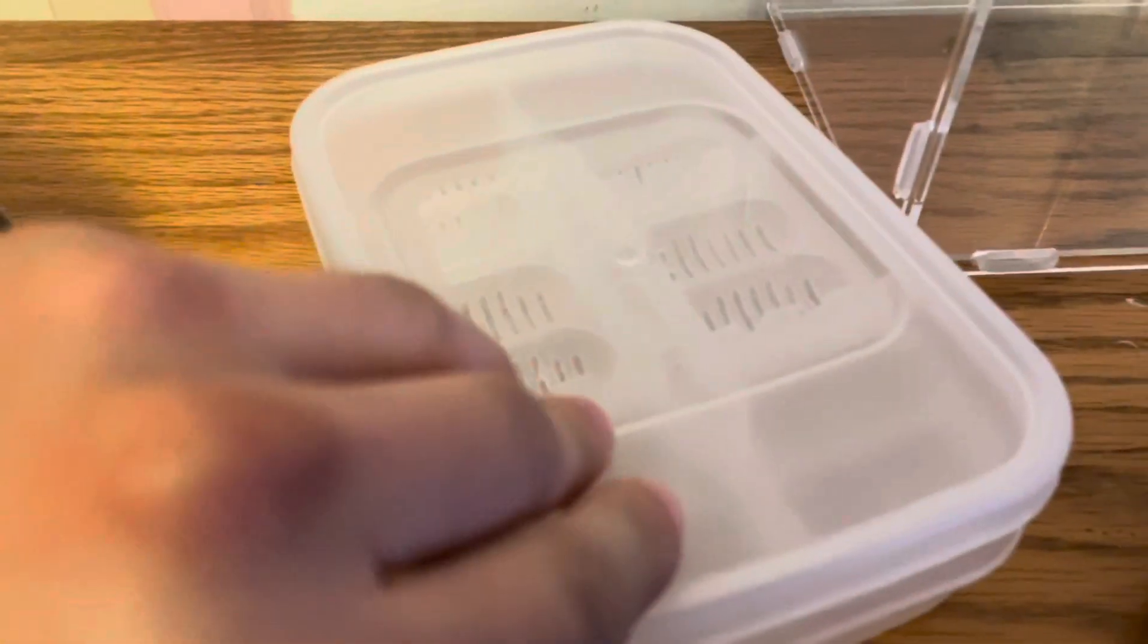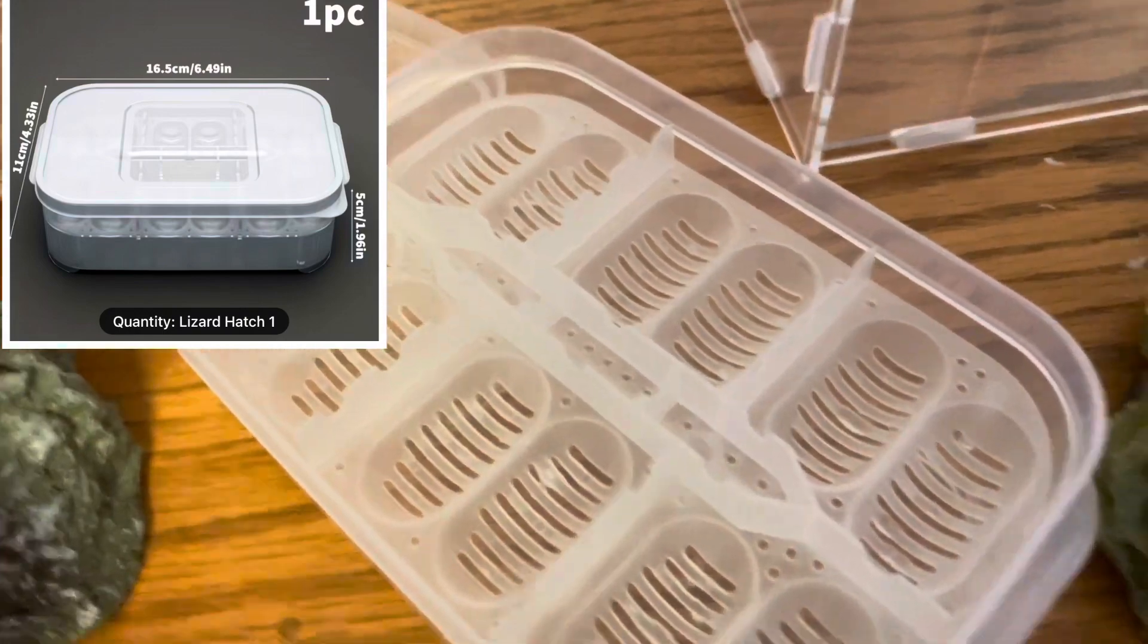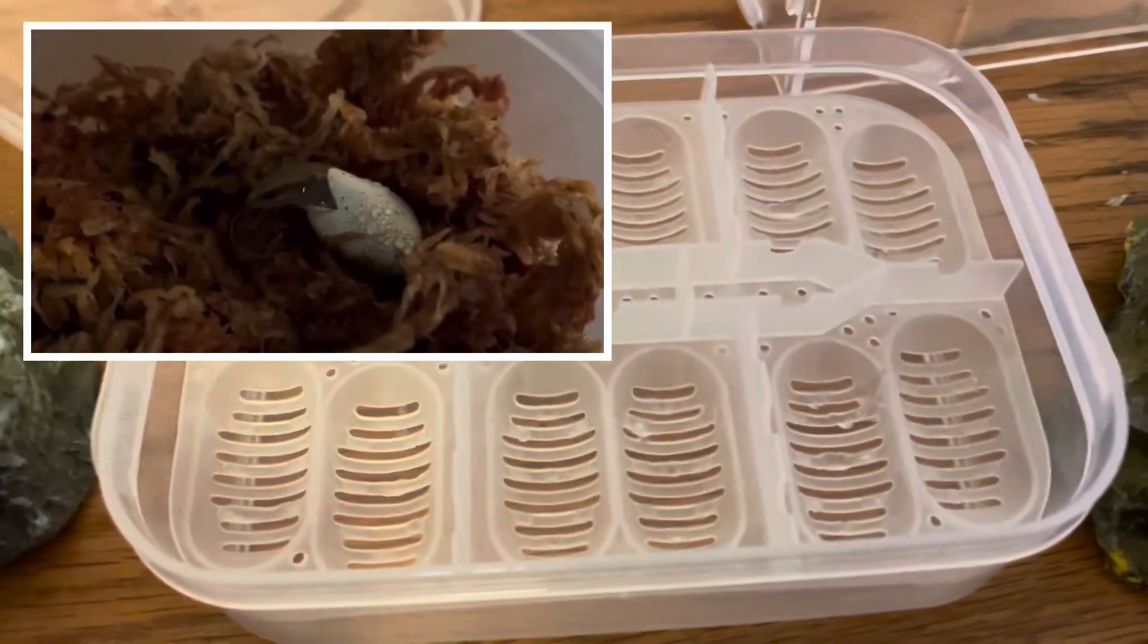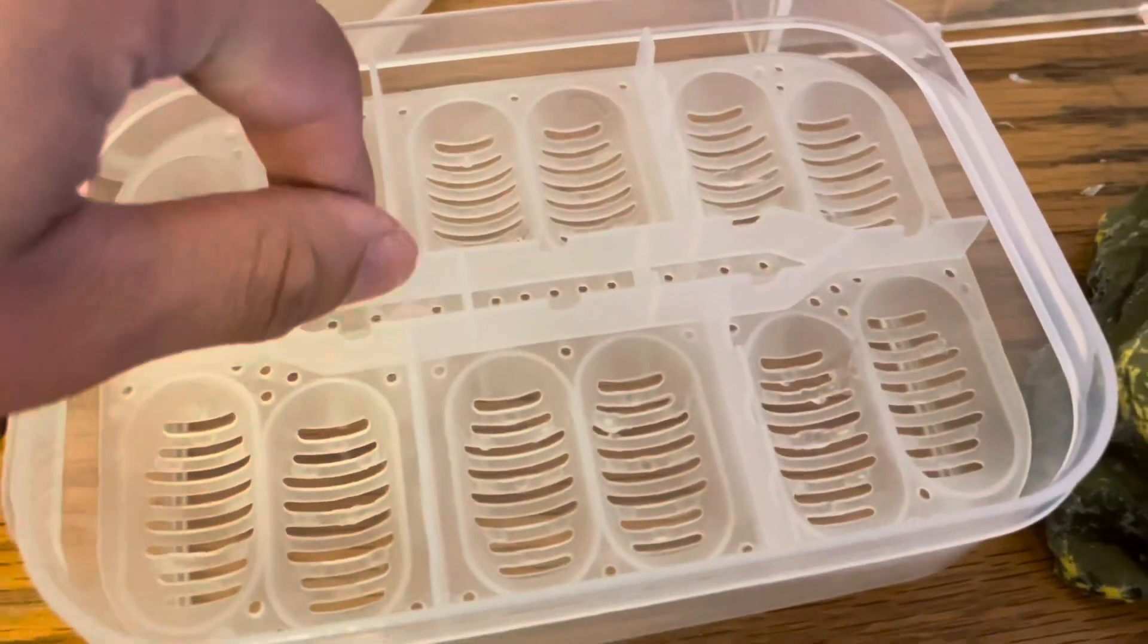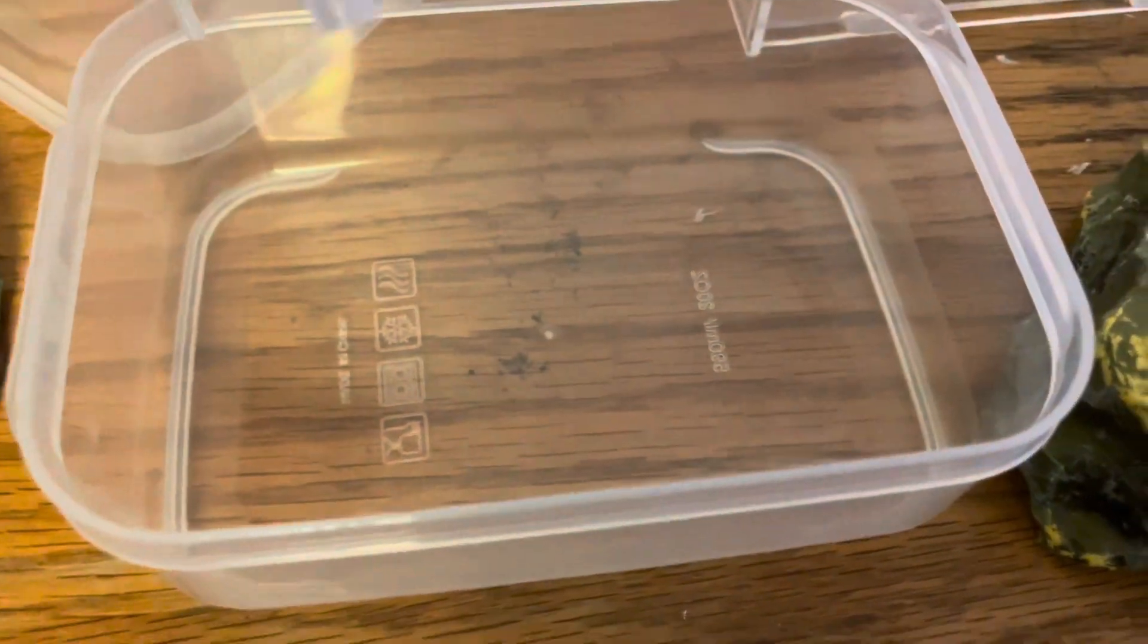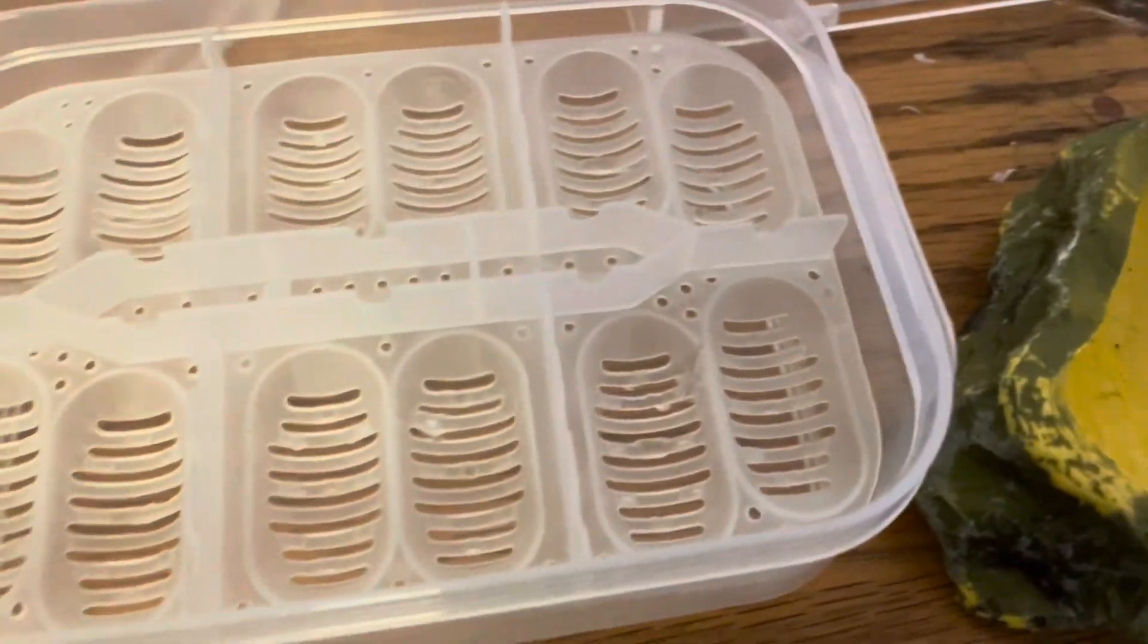And then I also got this little incubation container that you could put eggs in. If you remember, I've bred alligator lizards before. This might make it a little bit easier for me to organize. But yeah, you just put it in here. Maybe you could lift this and put some perlite or some sphagnum moss.